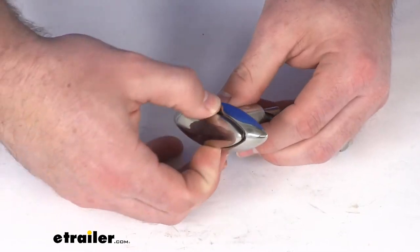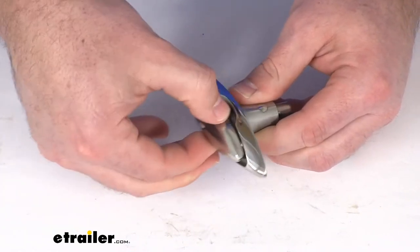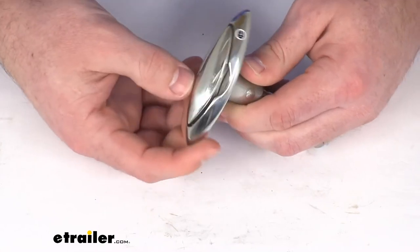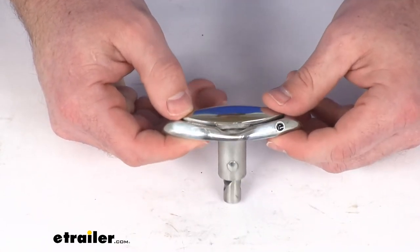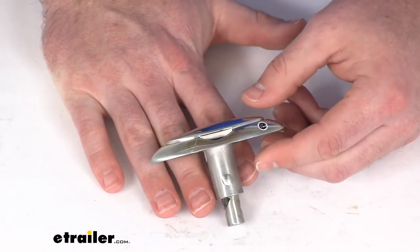You can see it does have that built-in twist-out functionality to it. So if you are in the market for a nice stainless steel boat cleat I think this is going to be a great option for you.